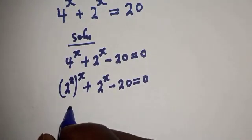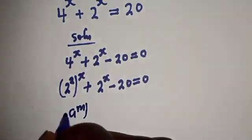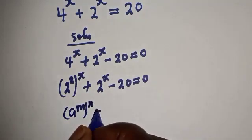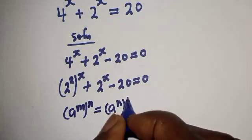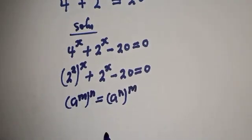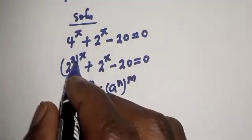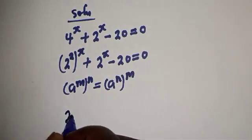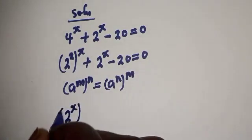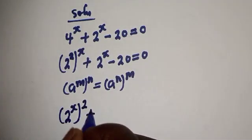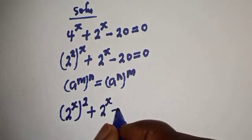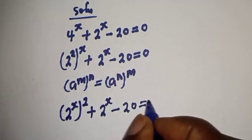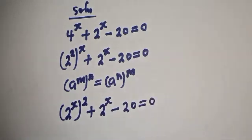Note this: if you have a raised to power m, raised to power n, it is equal to a raised to power n raised to power m. Then this can be written as 2 raised to power x, squared, plus 2 raised to power x minus 20 is equal to 0.